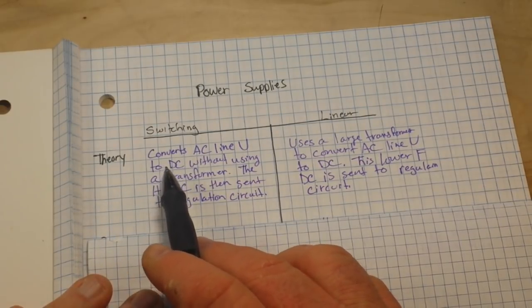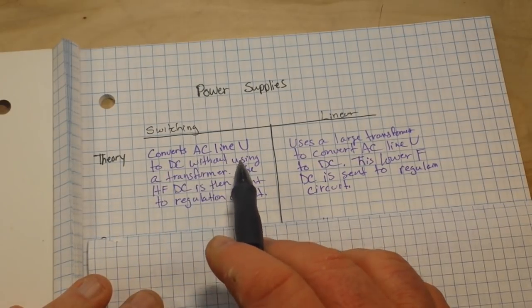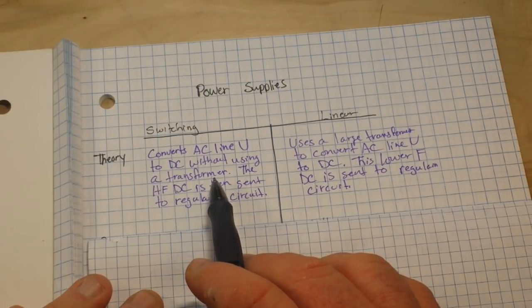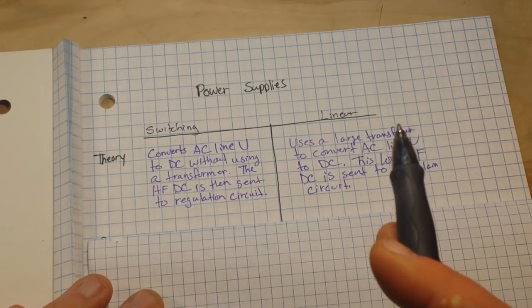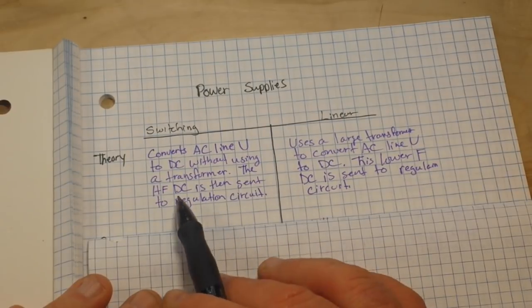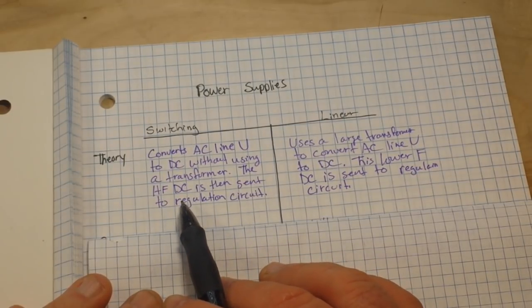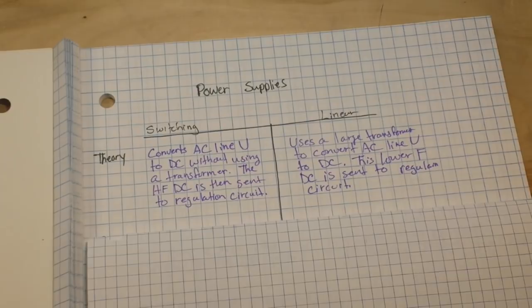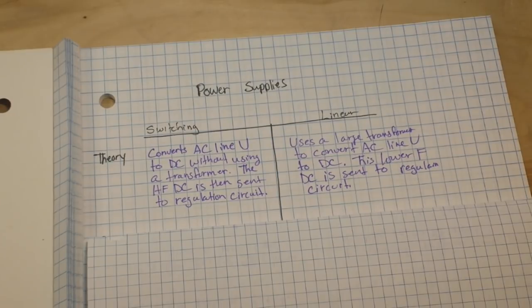A switching power supply converts your AC line voltage to DC without using a transformer. Don't worry, there's a transformer coming, but first it just converts it. The high-frequency DC is then sent to the regulation circuit. So first it takes the AC line voltage and uses discrete components or an IC to convert it to a very high-frequency DC, which is then regulated and then output.